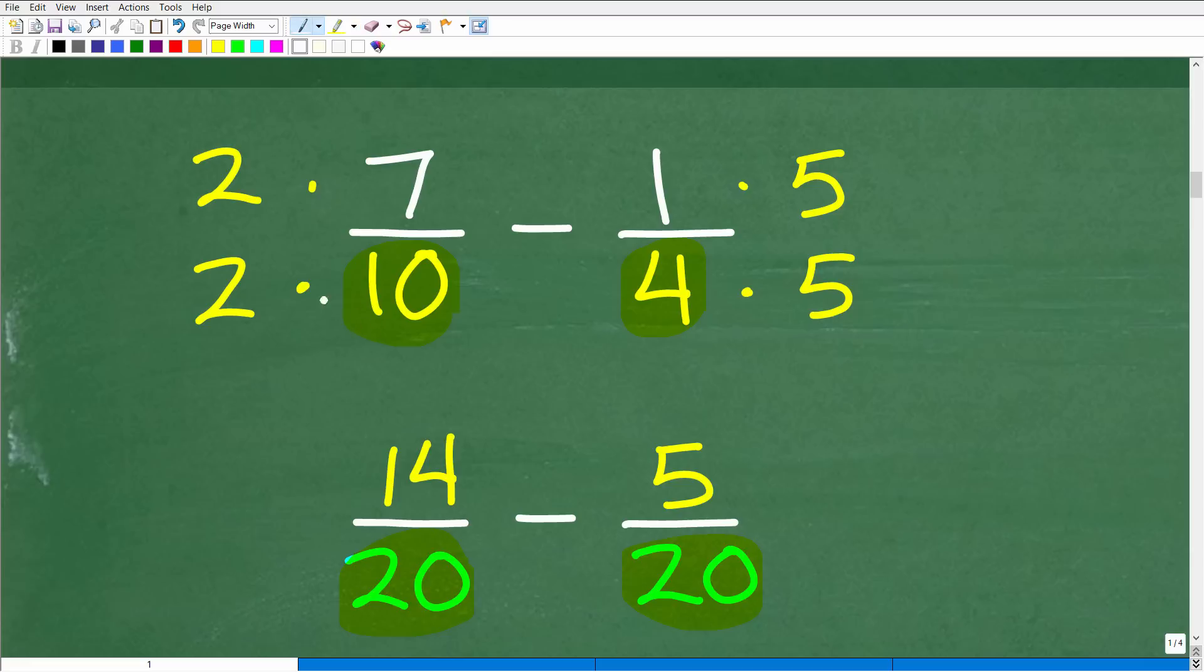So how do we turn a 10 into a 20? Easy, we just multiply it by 2. But if we multiply the denominator by 2, we need to multiply the numerator by 2. So this is going to be 14 over 20. All we're doing is rewriting this fraction. 14 over 20 is equivalent to 7 over 10.